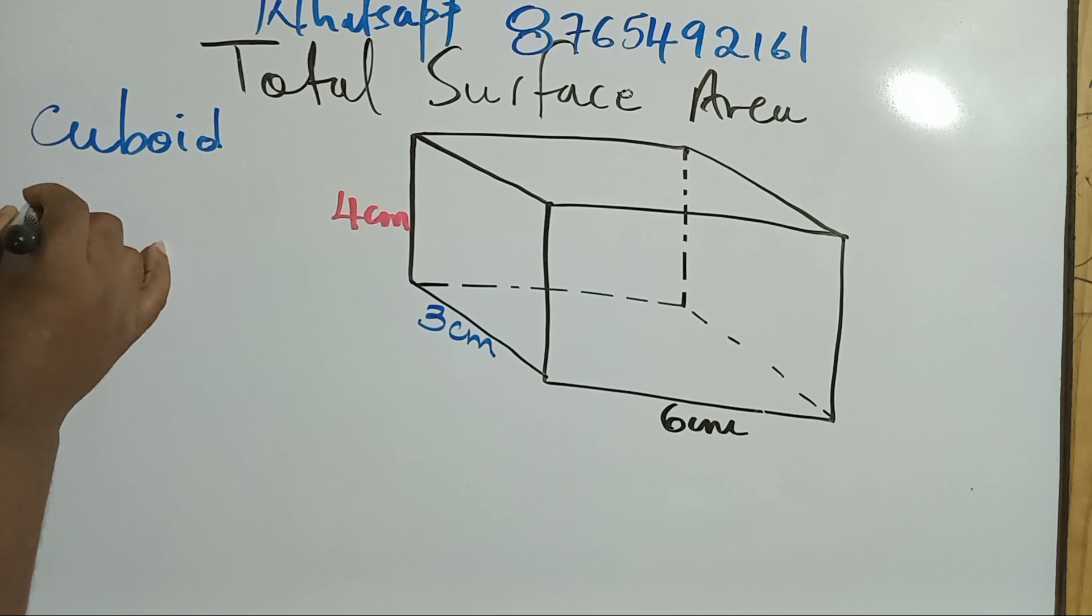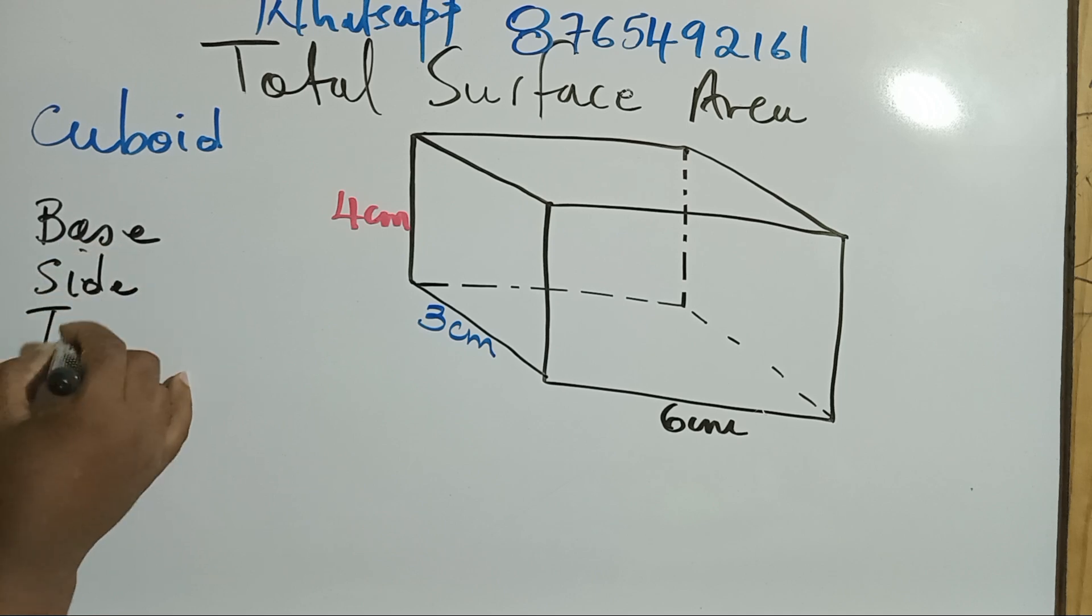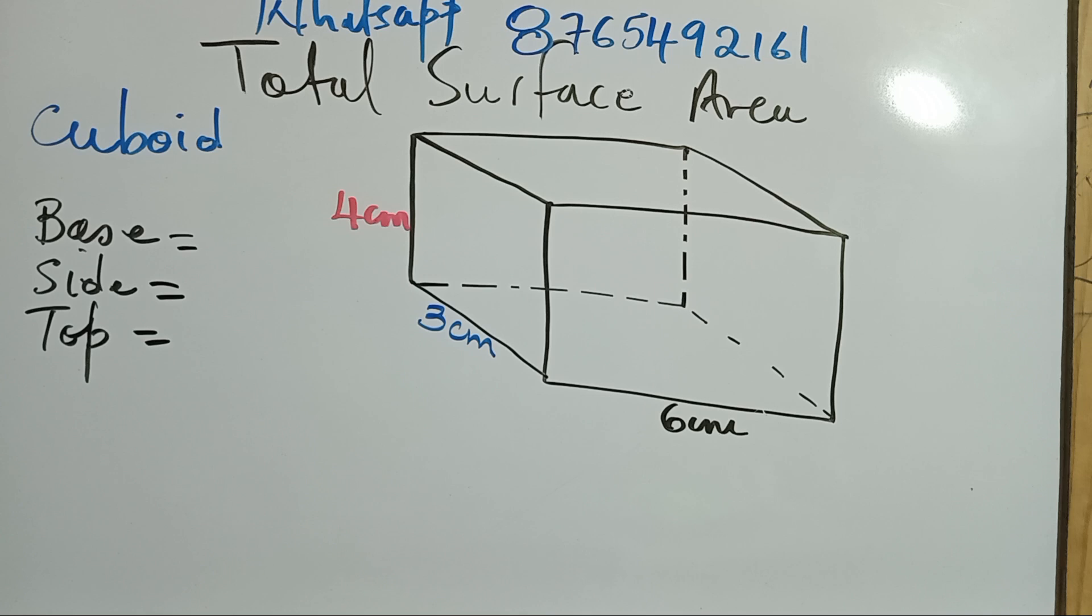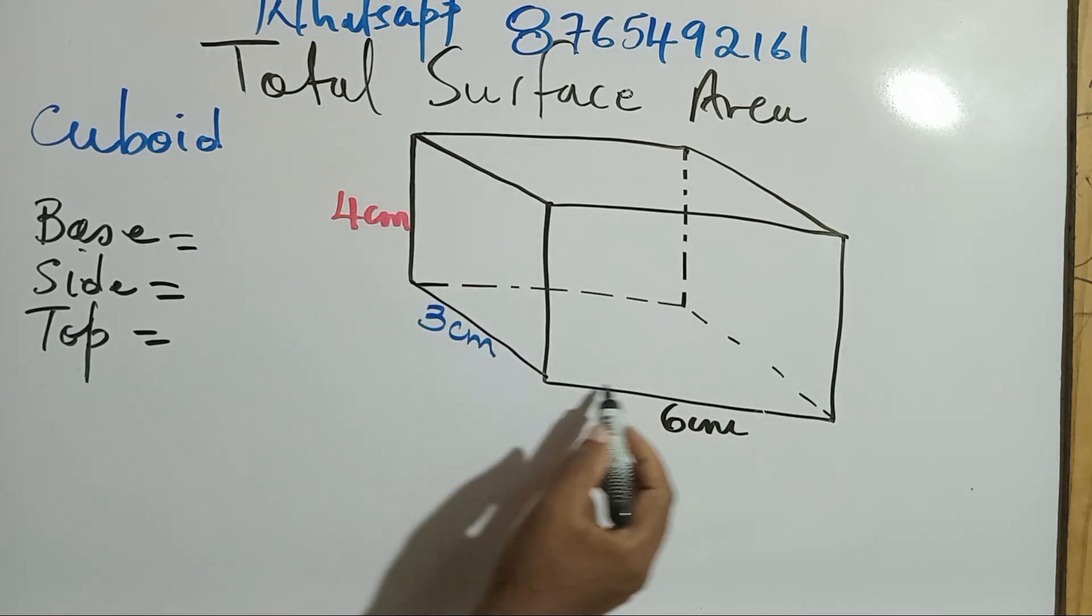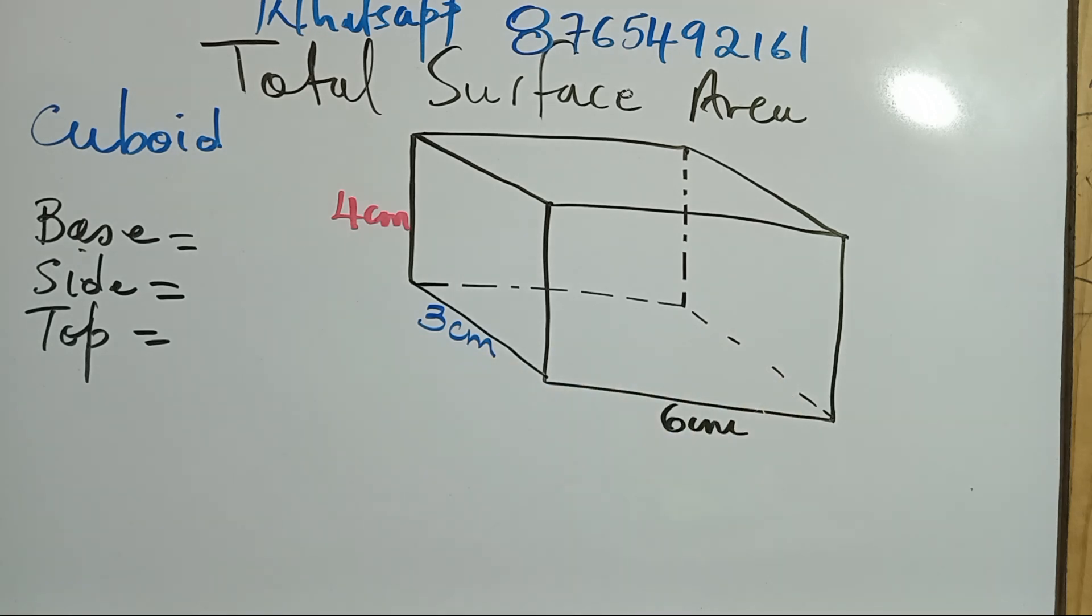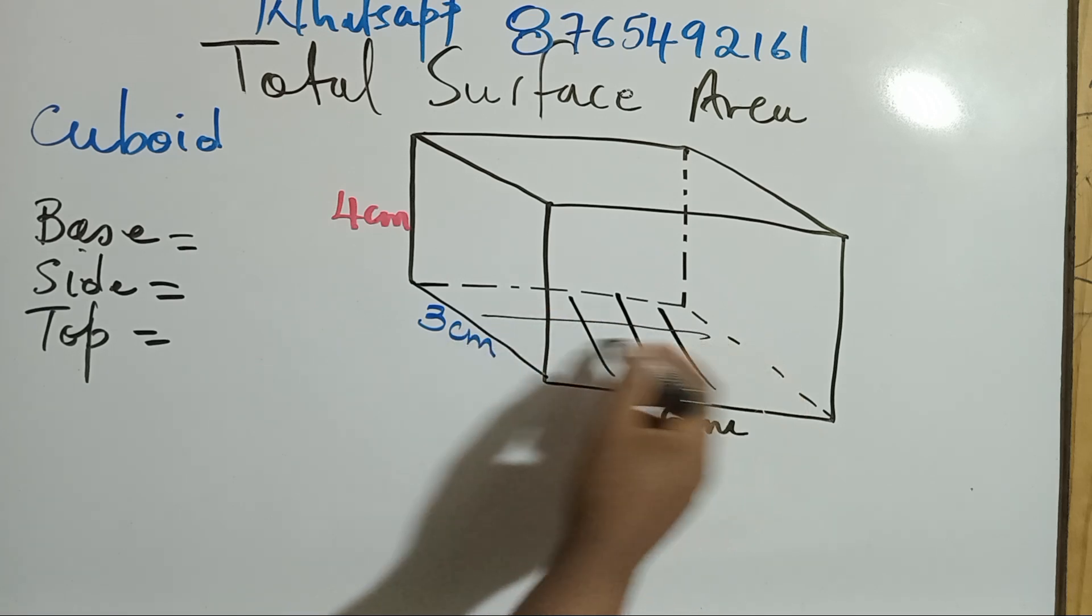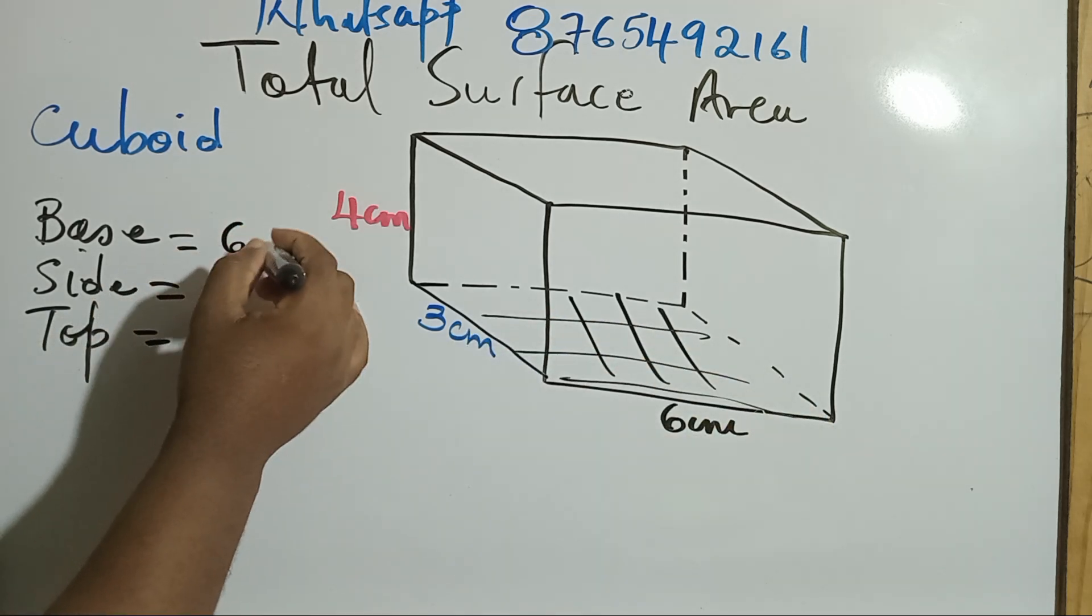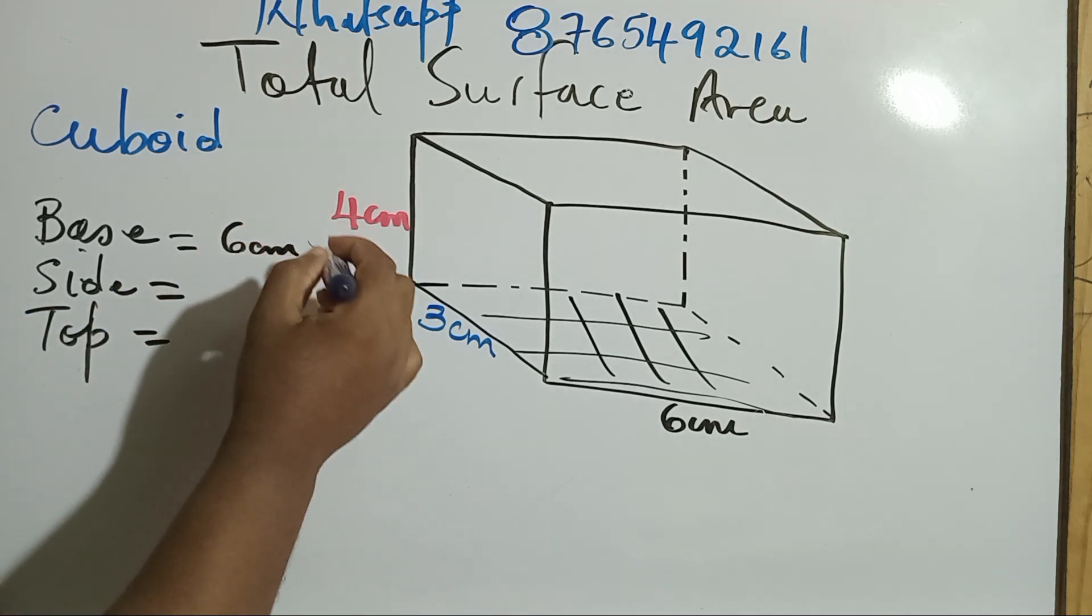So let's identify first the base, the side, and the top. So that's the first important thing for students. Once you can identify the base, so the base would have been three centimeters by six. See how easy it is? The base is what it is sitting on. All right. So it's six centimeters by three centimeters. And that's the base.